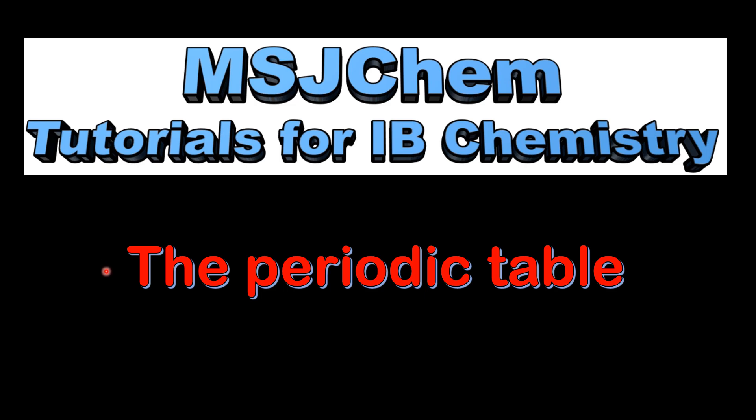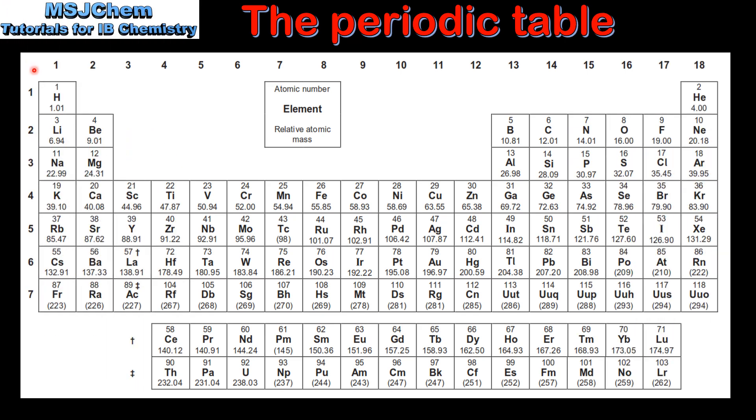This is MSJChem. In this video I'll be looking at the periodic table. Elements in the periodic table are arranged in order of increasing atomic number, which is the number of protons in the nucleus of an atom.